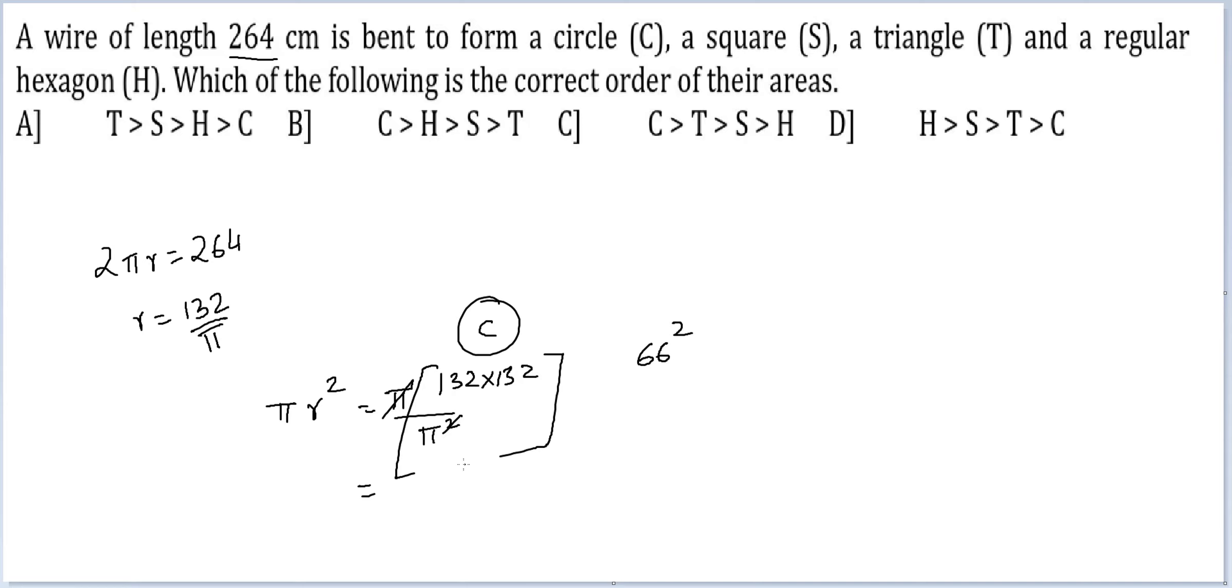Now, hopefully look at this. 132 × 132/π is as good as 66² × 4/π. And you are comparing it to 66². Can you see 66²?